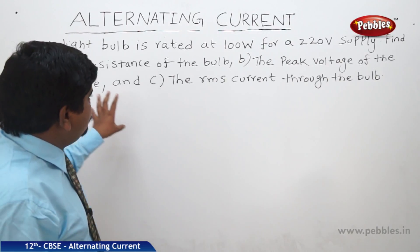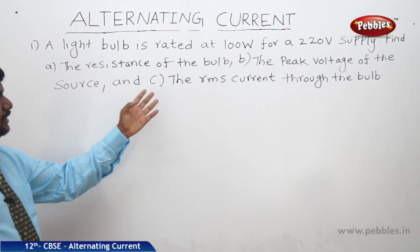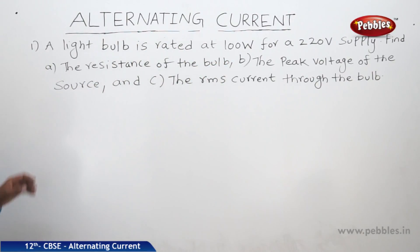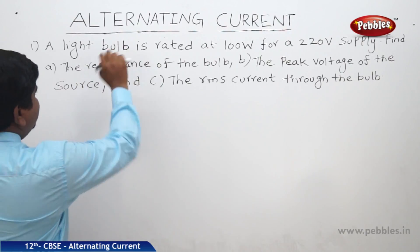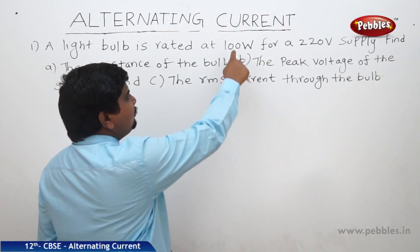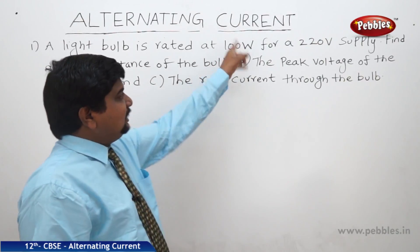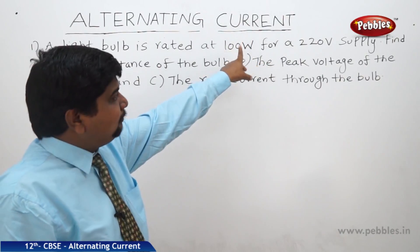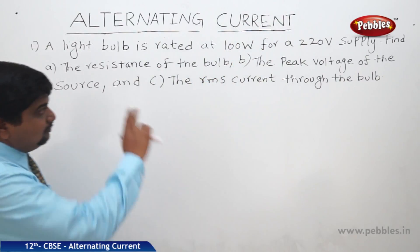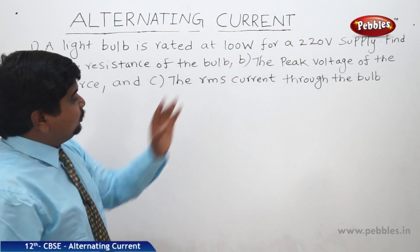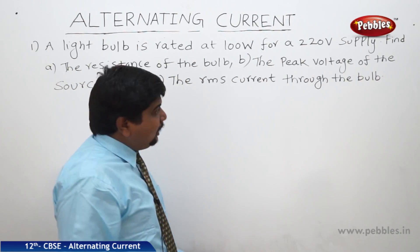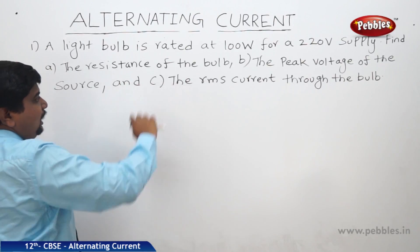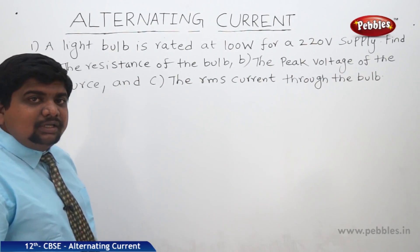We will see a problem related to power consumption, resistance, peak voltage, and RMS current. A light bulb is rated 100 watts — meaning the power consumption is 100 watts — for a 220 volt supply. From this information we need to find the resistance of the bulb R, the peak voltage of the source Vm, and the RMS current through the bulb.